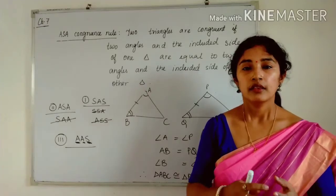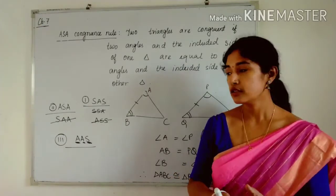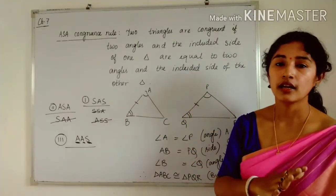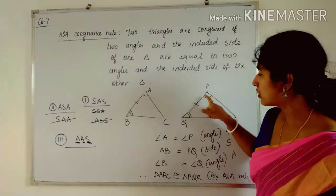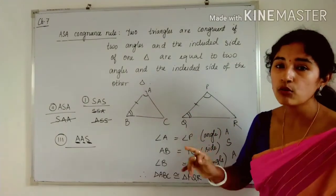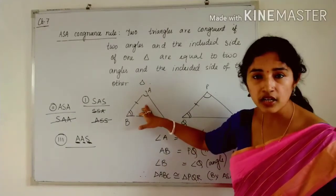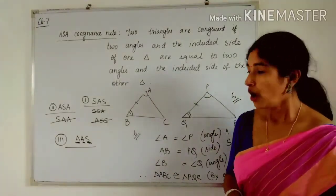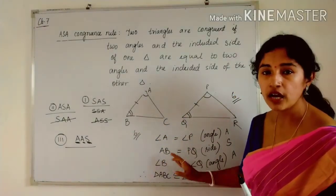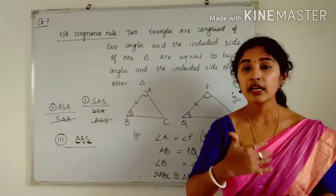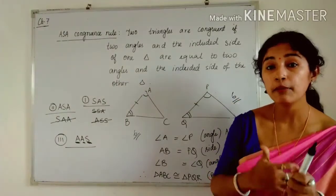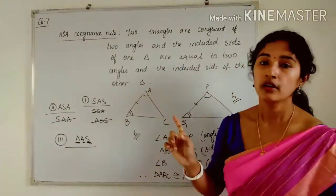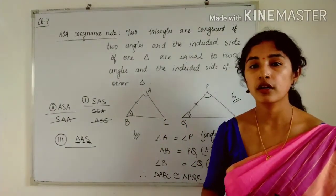If the triangles are congruent, what happens to the remaining parts? In SAS or any of these rules, we equate only three parts of the triangle. But a triangle has three sides and three angles — that is six total elements. We are mentioning only three elements. The remaining three elements will also be equal if the triangles are congruent. This is called CPCT — Corresponding Parts of Congruent Triangles are equal.